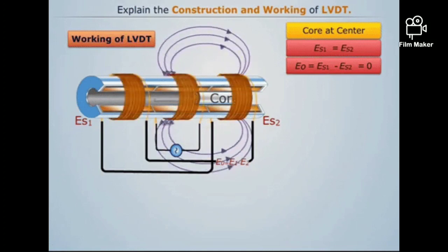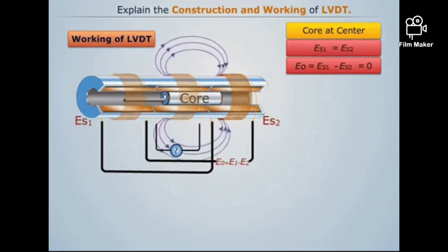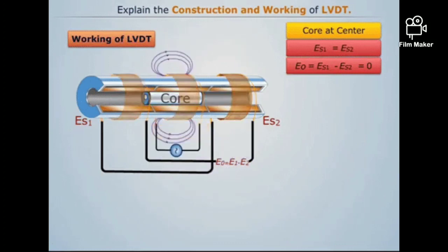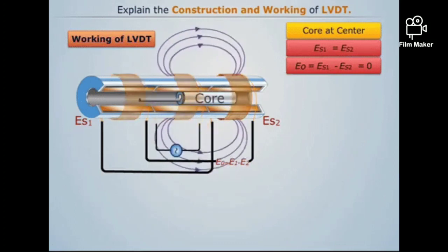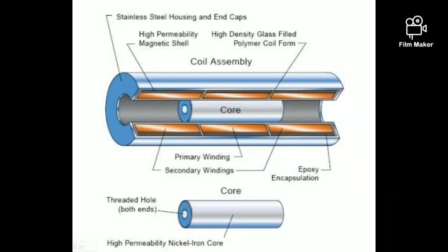When the core moves from the inner winding to the ES2 secondary winding, at that time ES2 is greater than ES1. When the core moves from the secondary winding to the primary winding first, at that time ES1 is greater than ES2.